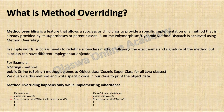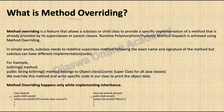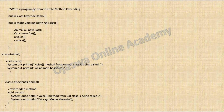In simple words, the subclass needs to redefine the superclass method following the exact name and signature, but the subclass can have a different implementation. We have seen method overriding earlier — for example, the toString method: public String toString belongs to the Object class, which is the cosmic superclass for all Java classes. We override this method and write specific code in our class to print the object data.